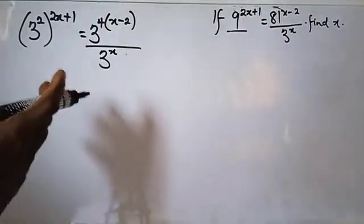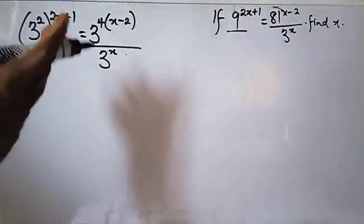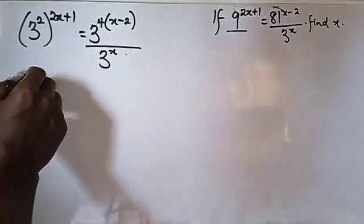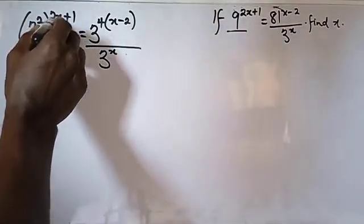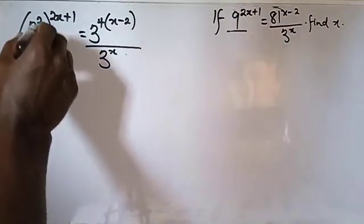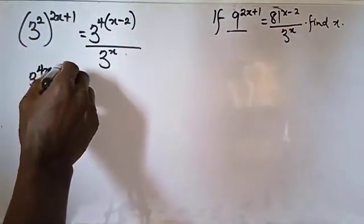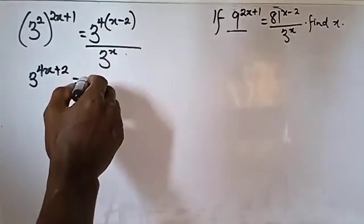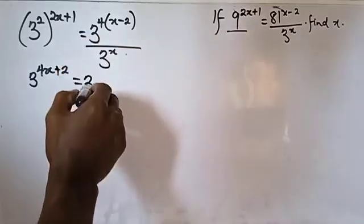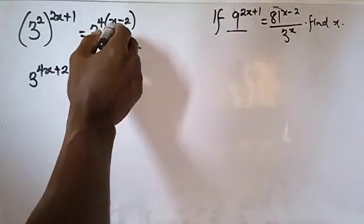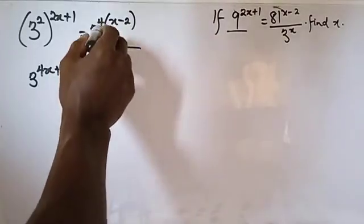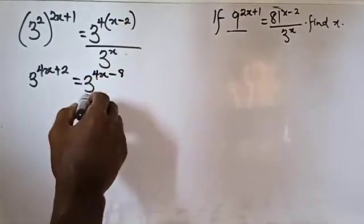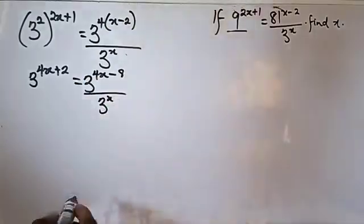We made it a common factor so it is easier to simplify. Now let us open the brackets. Here we have 3 raised to the power 2 times 2x, giving 4x, and 2 times 1 giving 2. That equals — opening the other bracket — 4 times x giving 4x, then 4 times minus 2 giving minus 8, all over 3 raised to power x.